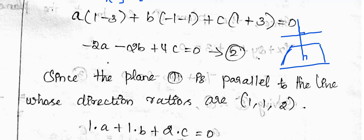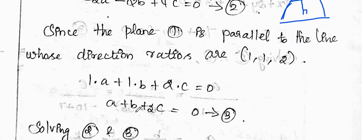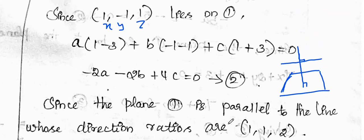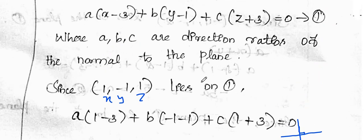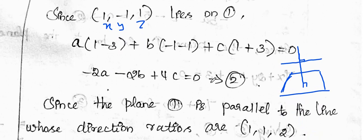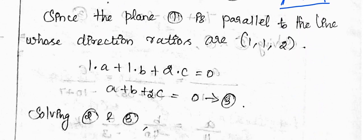Since the plane is parallel to the line whose direction ratios are (1, 1, 2), the normal of the plane is perpendicular to this line. Therefore: 1·a + 1·b + 2·c = 0. This is equation 3. Now we solve equations 2 and 3 together.